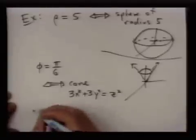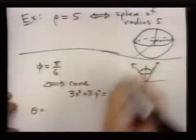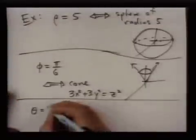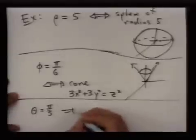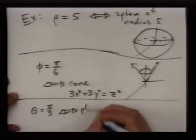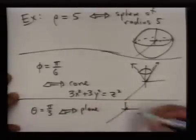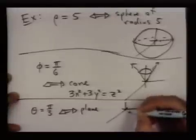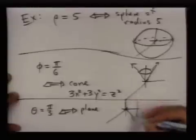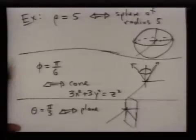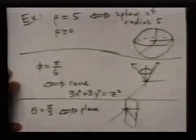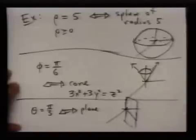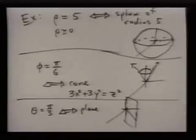And finally, what happens if you set theta equal to some constant? What surface do you get? Theta being a constant actually just gives you a plane. Because if theta is always equal to pi over 3, you're just looking at this shape here. It's really a half plane since we generally force rho to be positive. And that's all I have to say about spherical coordinates.